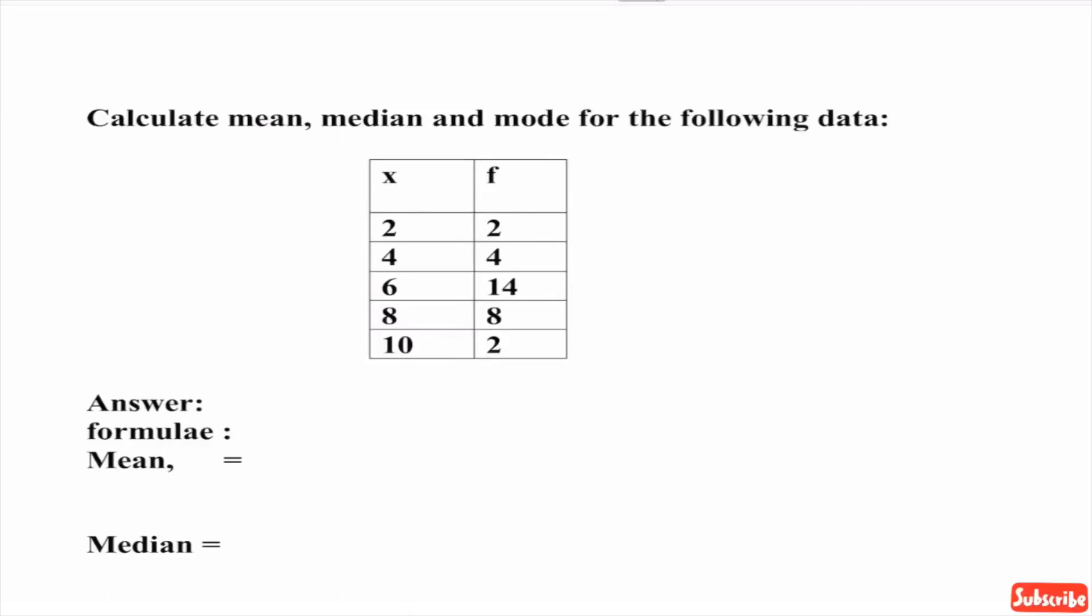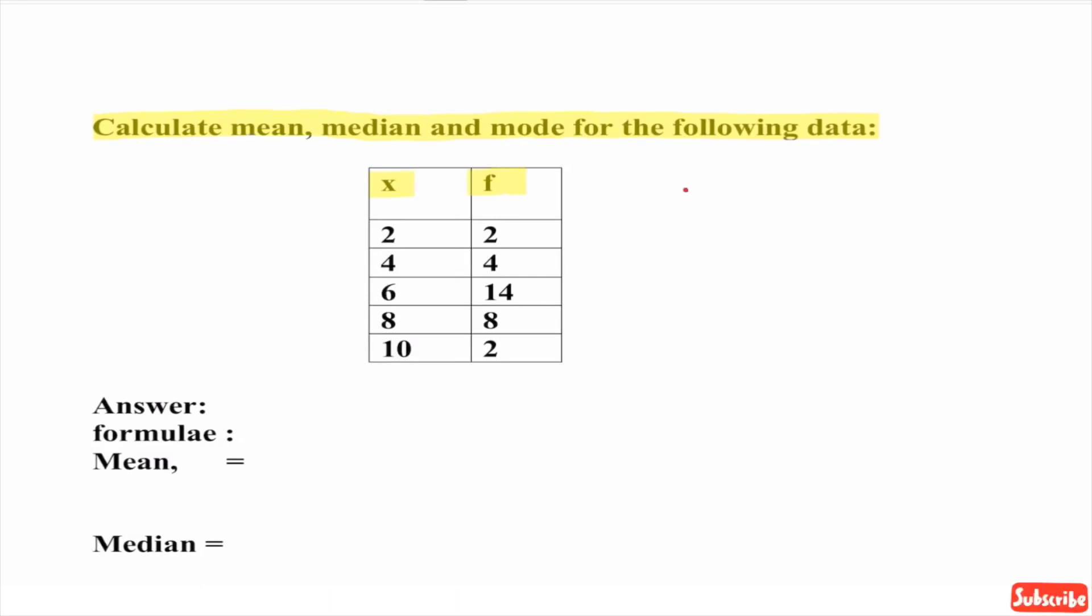Here the question is to calculate mean, median, and mode for the following data. In the data we are given two columns. First column is for values of x and second for f, where x are observations and f are frequencies.